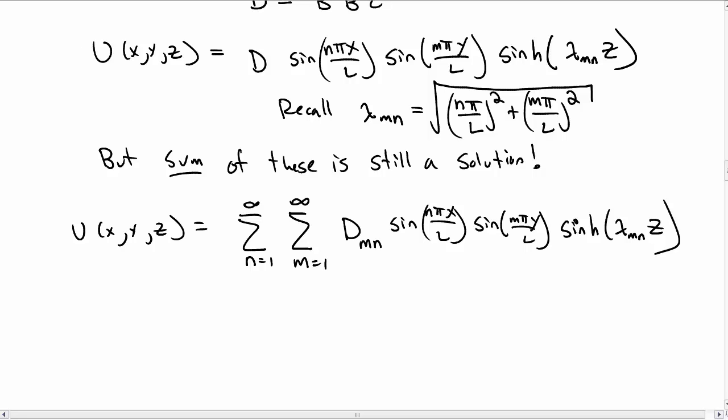In the last video we had ended up writing our temperature inside the cube as a double sum of solutions with some constants d_mn. Now we need to figure out how we're going to solve for these set of arbitrary constants.